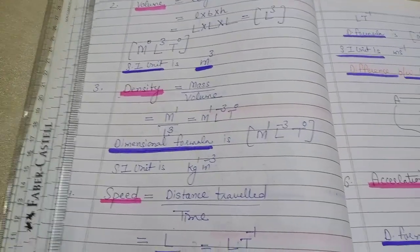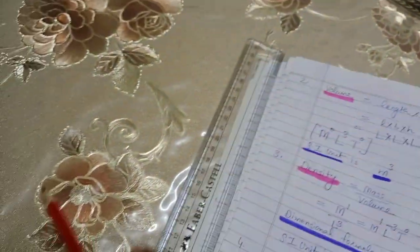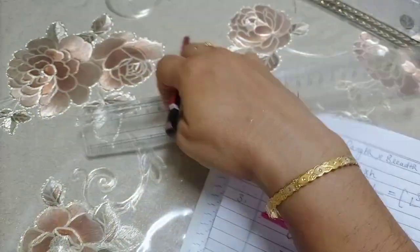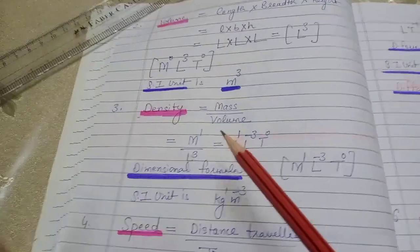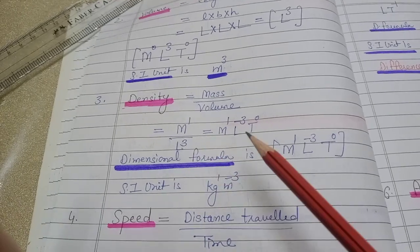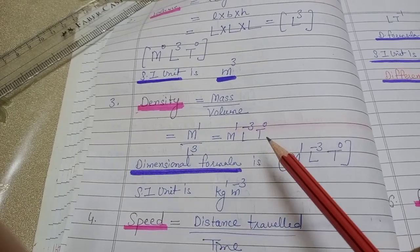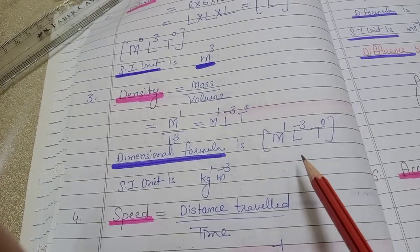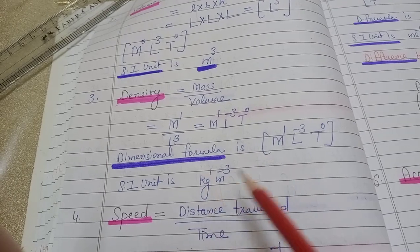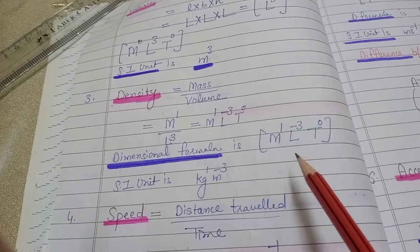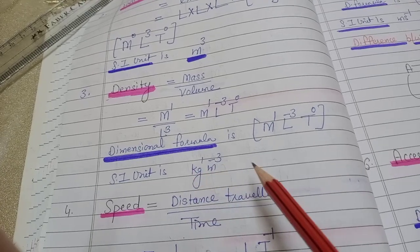Next is density — mass per unit volume। Formula: mass / volume। Mass का M¹, volume का L³ — L ऊपर आया तो L⁻³, time नहीं है। Dimensional formula: [M¹L⁻³T⁰]। SI unit: mass को kilogram में, distance को meter में — same powers लगानी हैं — तो kilogram per meter cube, यानी kg/m³।